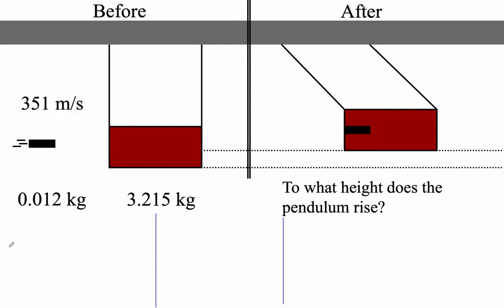The first scenario is we've got a bullet and block. And then in the next scenario, we've got bullets stuck in block. So we've got to figure out this velocity. And then we're going to do the exciting thing where the block swings up to some height.